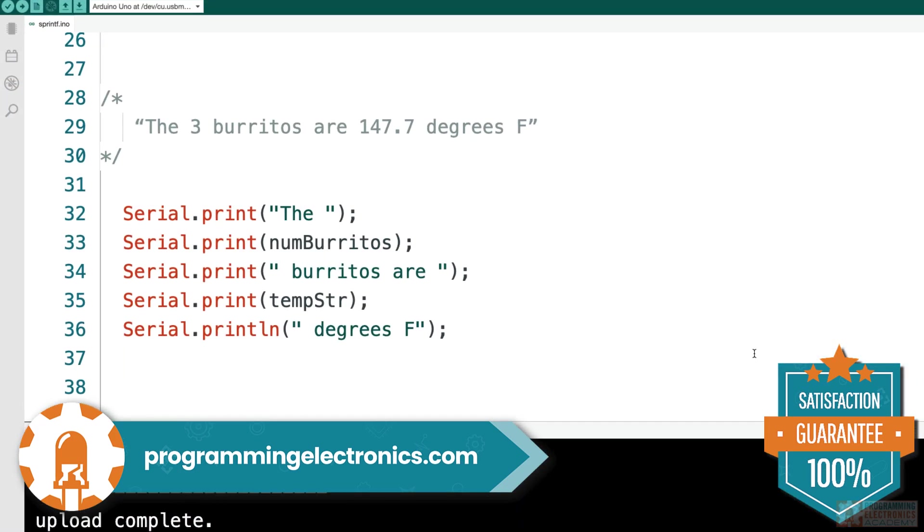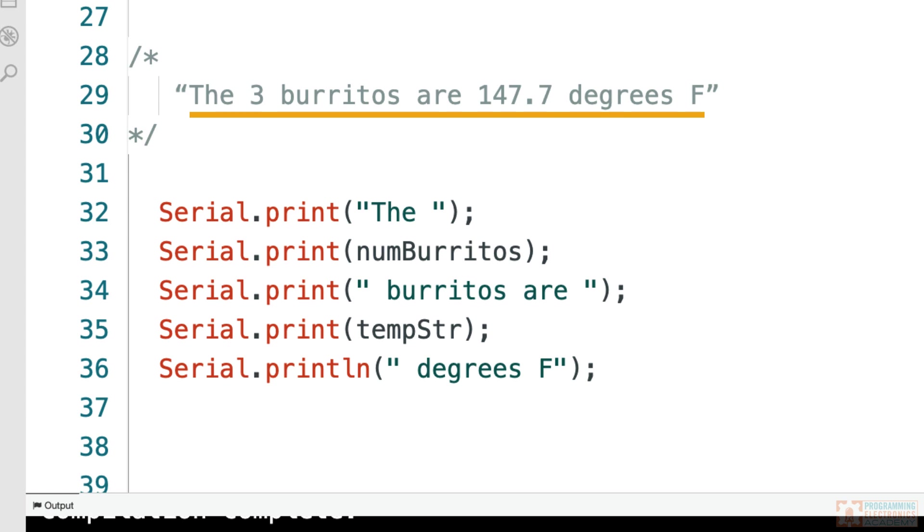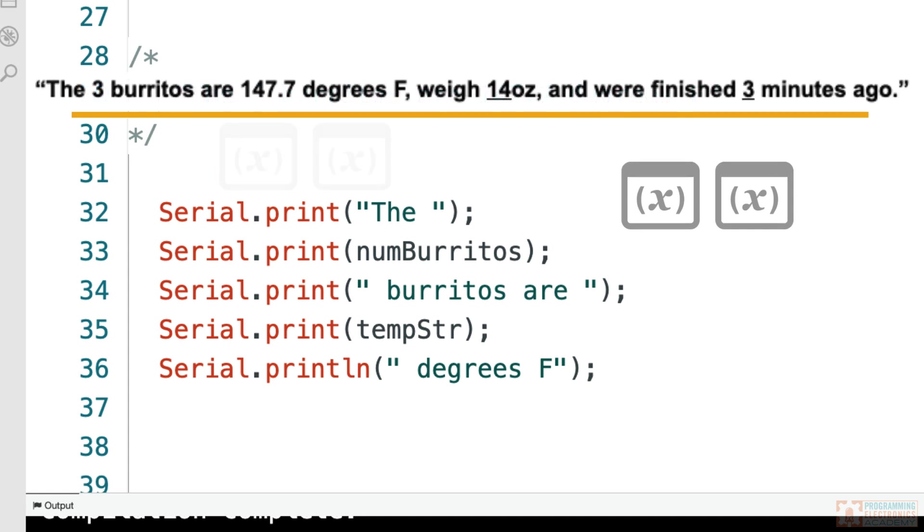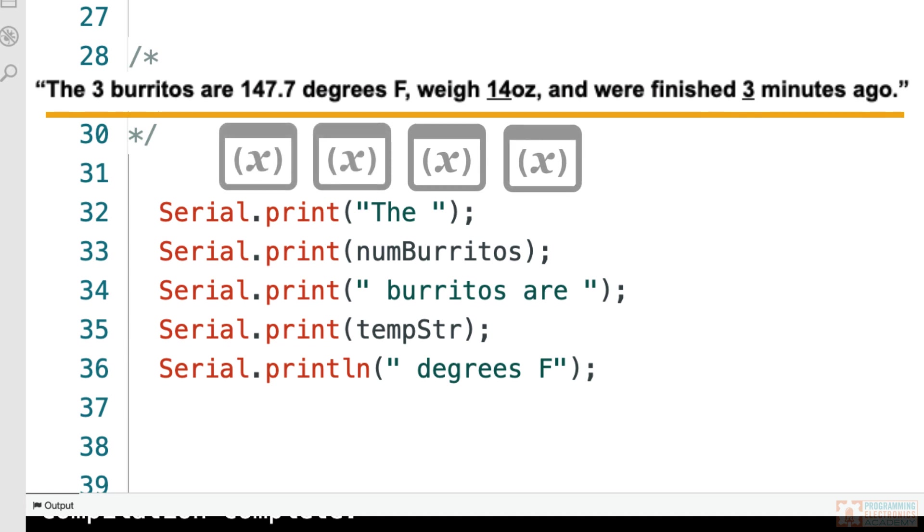All right, let's say you want to print this line of text to the serial monitor where the number of burritos and the temperature value are both variables. Using the serial print function would take like five lines of code just to print out this single line of text. In fact, for every variable we add to the output string, we have to add two more serial prints in the code. So if we wanted to print something with four variables inserted into our string, it'd take like nine lines of code.